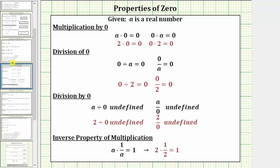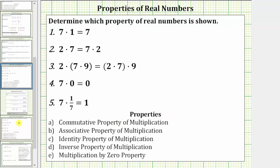Going back to our examples, we are first given seven times one equals seven. Notice here we have a product involving one, and therefore this shows the identity property of multiplication, which is c. Next we have two times seven equals seven times two. Here the order of the multiplication has changed. This is the commutative property of multiplication, which is a.